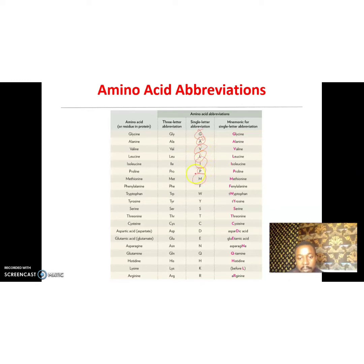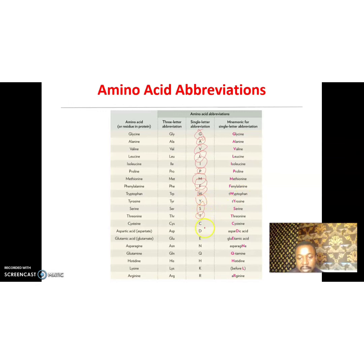Continuing with single-letter codes: valine is V, leucine is L, isoleucine is I, proline is P, methionine is M, phenylalanine is F, tryptophan is W, tyrosine is Y. Serine is S, cysteine is C, aspartic acid is D, glutamic acid is E, asparagine is N, glutamine is Q, histidine is H, lysine is K, and arginine is R.